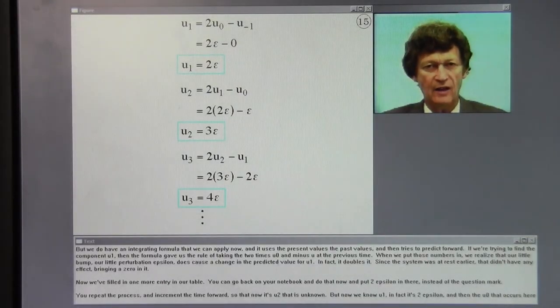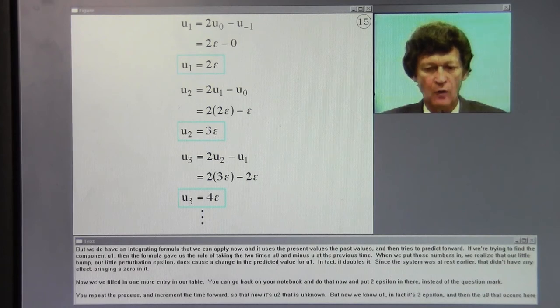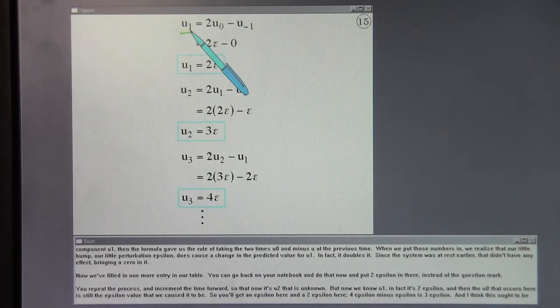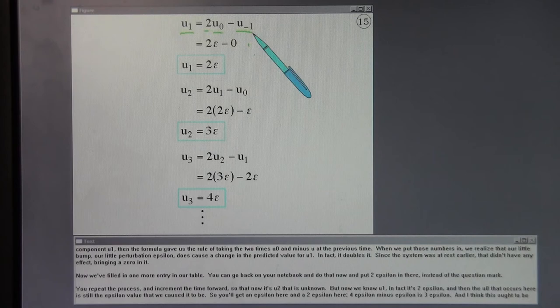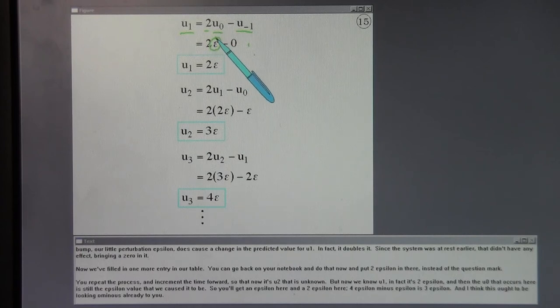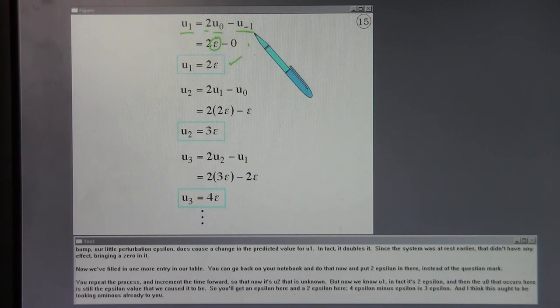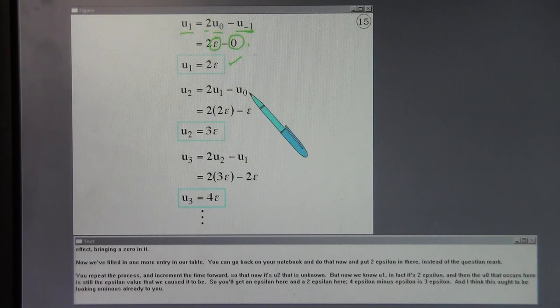But we do have an integrating formula that we can apply now. And it uses the present values and past values and then tries to predict forward. If we're trying to find the component U1, then the formula gave us the rule of taking two times U0 and then minus U at the previous time. When we put those numbers in, we realize that our little bump, our little perturbation epsilon does cause a change in the predicted value for U1. In fact, it doubles it. Since the system was at rest earlier, that didn't have any effect. Now we've filled in one more entry in our table. You repeat the process and increment your time forward so that now it's U2 that's unknown.